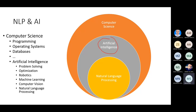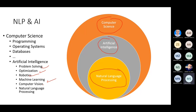As you know, artificial intelligence is a subfield of computer science, and AI has many subfields like problem solving, optimization, robotics, machine learning, computer vision, and one of them is natural language processing. NLP can also be a subfield of machine learning, but it also uses some classical techniques for processing text that do not belong to machine learning. So NLP can be under machine learning and also directly under AI.